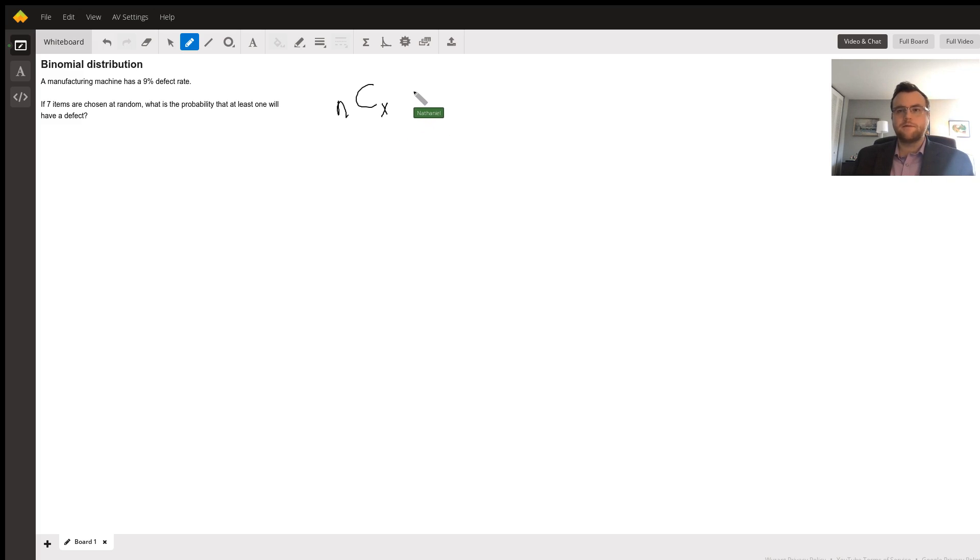And then what we will do is multiply that by p, being the probability of a success. In this case, 9% defect rate, so the defect rate is the success in this case. A bit confusing there, but bear with me. So this is p to the x, the number that we are expecting to have the defect. And then we will also multiply that by our q value to the n minus x. So this is our total population, 7, and then however many that we will want to choose from that population.